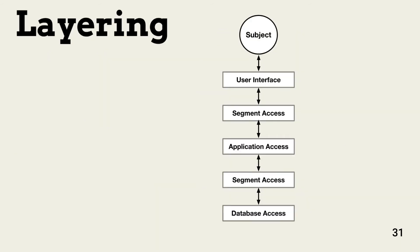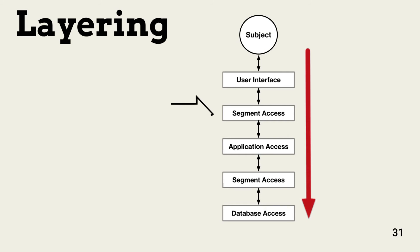Layering provides an infrastructure that contains multiple security layers. For example, a user attempting to access an application must authenticate. Once on the application, the application must access the database. At each layer, the entity attempting access must authenticate. In addition, the system elements are separated by network segments, and at each segment border, the traffic is checked to determine if it is allowed.